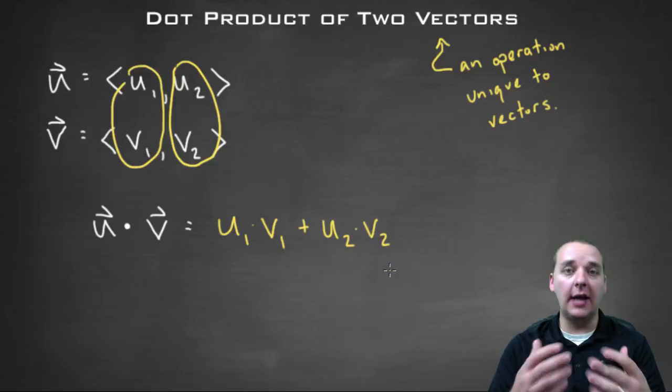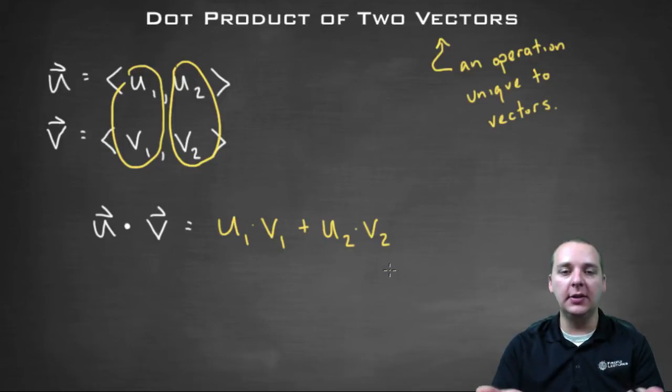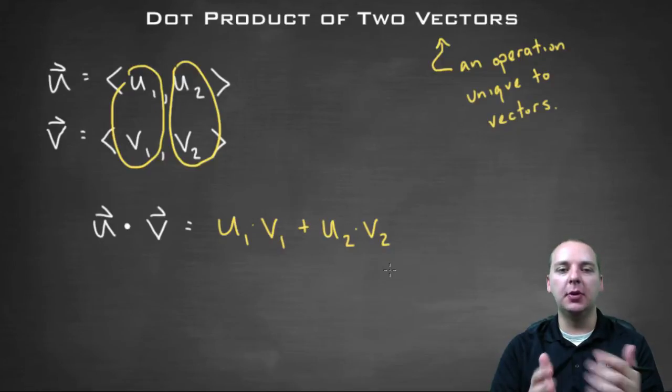So u dot v will be u1 times v1 plus u2 times v2. Now we have a lot to talk about, like what does that mean, what does that give you, look through an example and some of those other sorts of things. But for now let's just focus on the algebra.